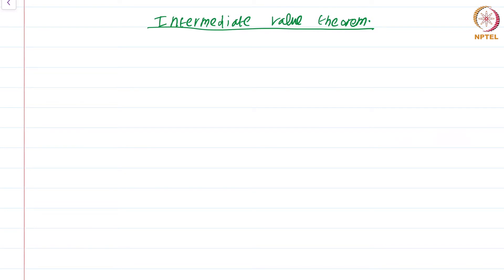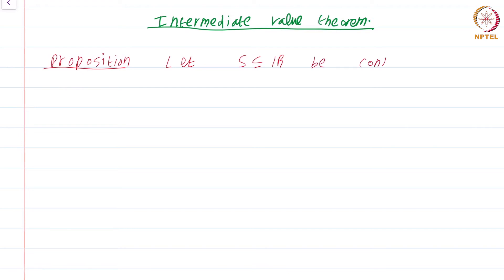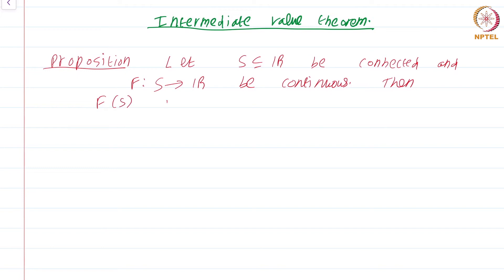In this module, we are going to prove the famous Intermediate Value Theorem, which you might recall was the way we started our course. Before that, let me state a proposition which is quite easy to prove now that we have extensively studied various equivalent ways of defining connectedness. Let S be a subset of R be connected and F from S to R be continuous. Then F of S is connected — the image of a connected set under a continuous mapping is connected.